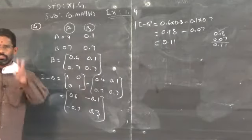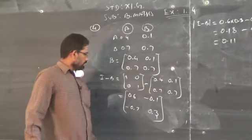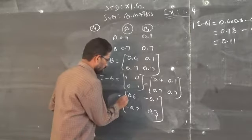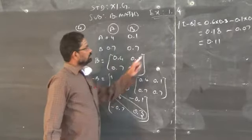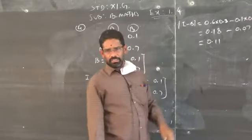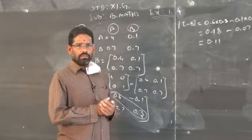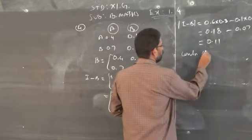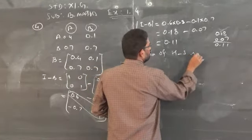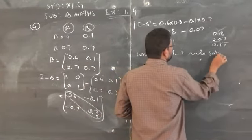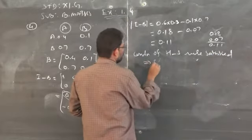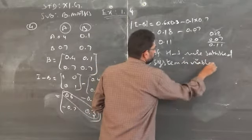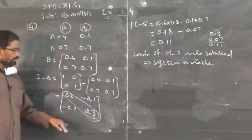Now check the two Hawkins-Simon conditions. The main diagonal elements of I minus B are 0.6 and 0.3 — both positive. The determinant of I minus B is 0.11, which is also positive. Therefore, both conditions are satisfied and the system is viable.